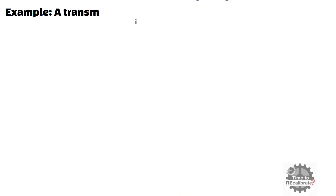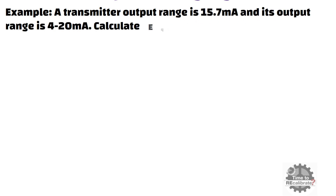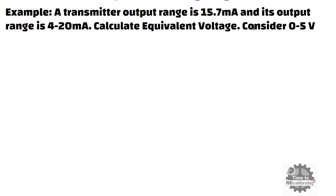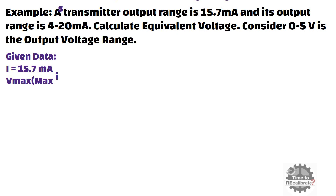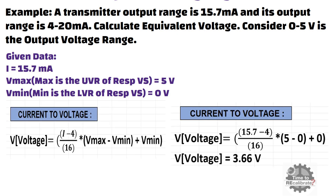For example, a transmitter output is 15.7 milliamperes and its output range is 4 to 20 milliamperes. Calculate the equivalent voltage, considering 0 to 5 volts as the output voltage range. The given data is: I = 15.7 milliamperes, Vmax = 5 volts, and Vmin = 0 volts. Putting all these values into the equation and doing the math, you will get 3.66 volts. In other words, when current is 15.7 milliamperes, the voltage value is 3.66 volts.